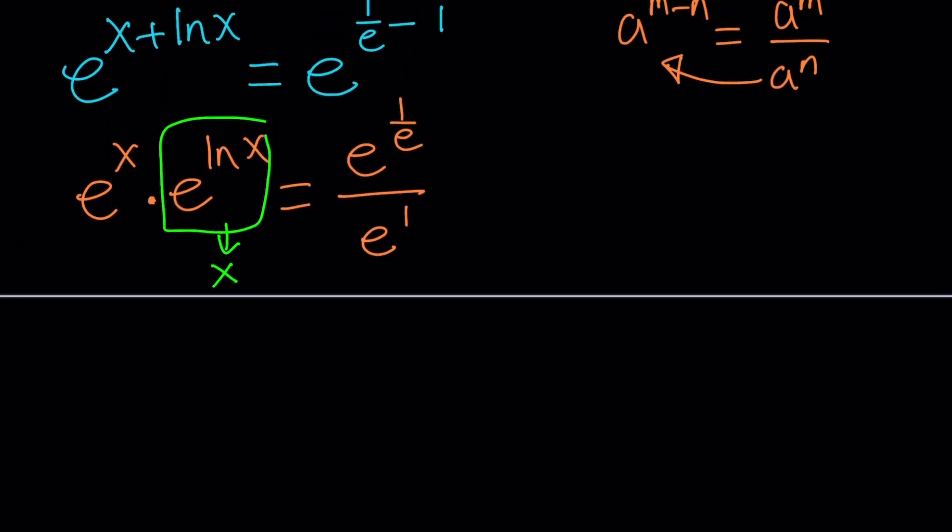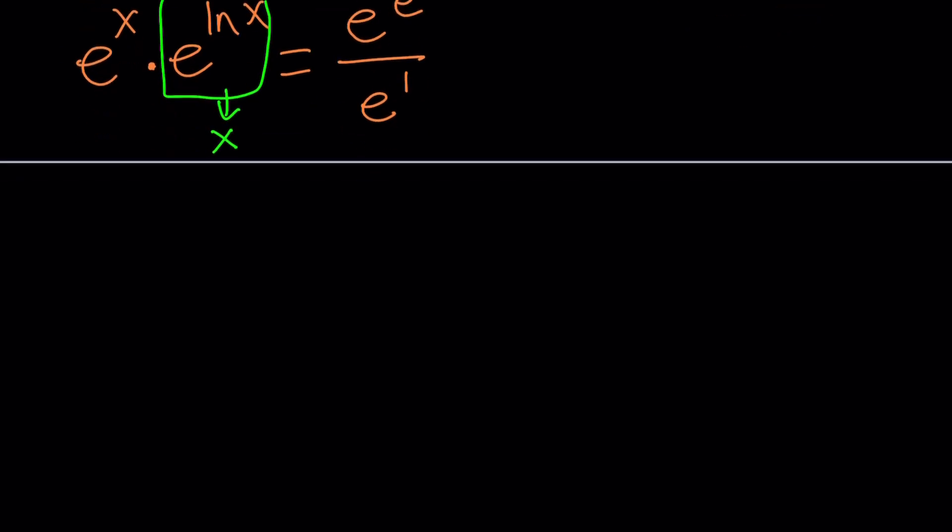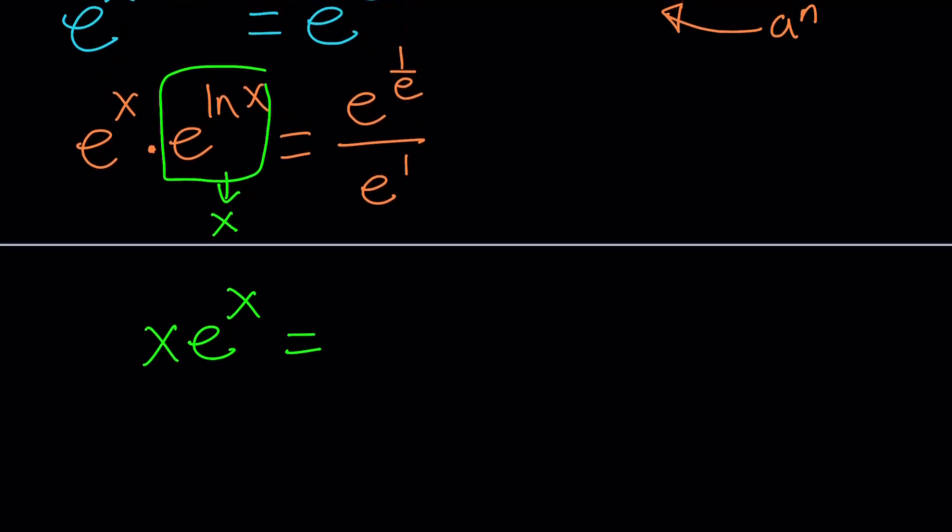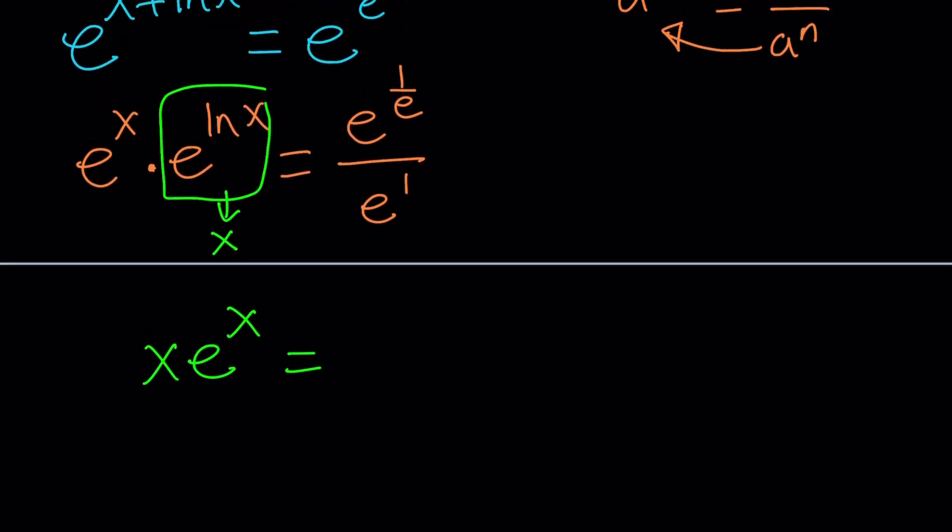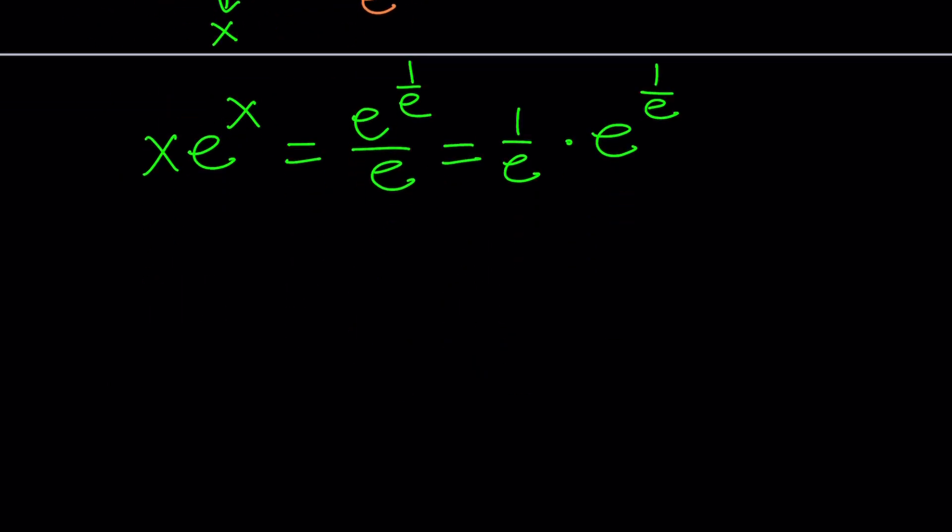Now, from here we get e to the x times x, but I want to write it as x times e to the x, because, like I said earlier, we're going to talk about a special function. What about the right-hand side? Well, the right-hand side is e to the power (1 over e) divided by e, but I can also write it as (1 over e) multiplied by e to the power (1 over e). So, let me rewrite what we have. x times e to the x equals (1 over e) times e to the power (1 over e).